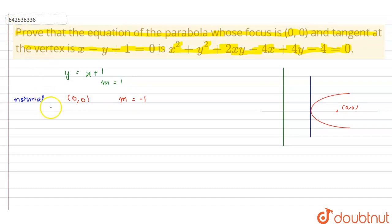The equation of the normal at vertex will be y - 0 = -1(x - 0), so we get the equation as x + y = 0. Now, if we solve the tangent at the vertex and the normal at the vertex, we will get the coordinates of the vertex. Solving these, we get the vertex as (-1/2, 1/2).